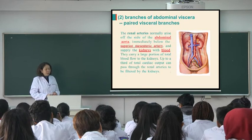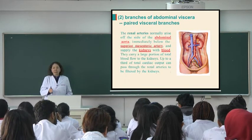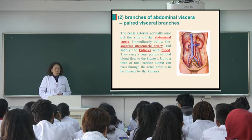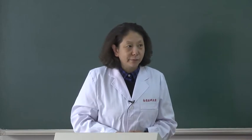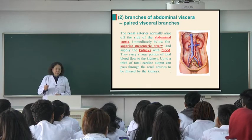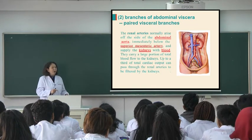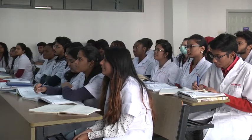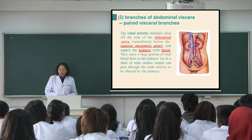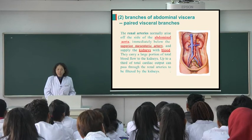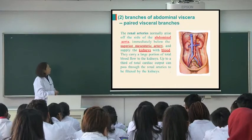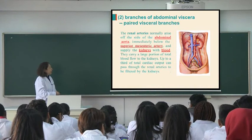Let's move to the renal artery. The renal artery originates from each side of the abdominal aorta. From this picture, please tell me which side — left or right — the renal artery is longer. The right side renal artery is longer than the left side, because the abdominal aorta is located anterior and left to the vertebral column. So the right side renal artery is longer than the left side. The renal artery supplies the kidney with blood.